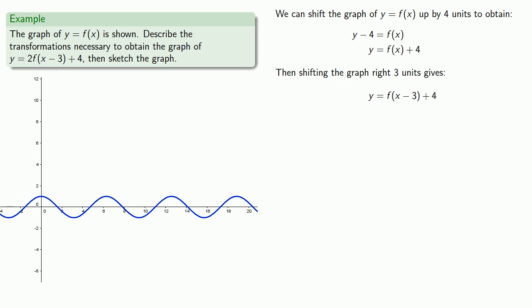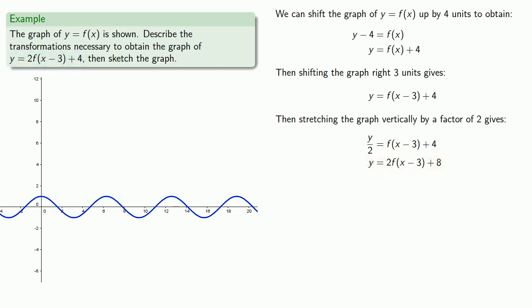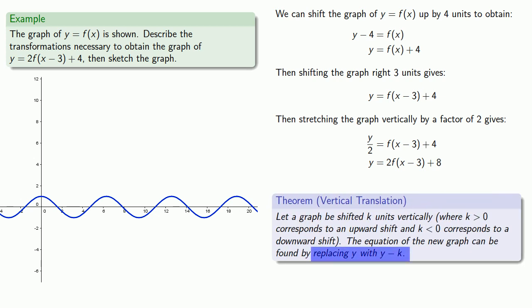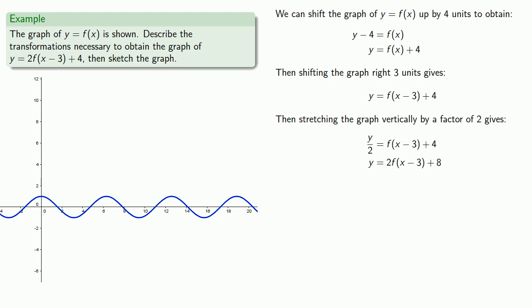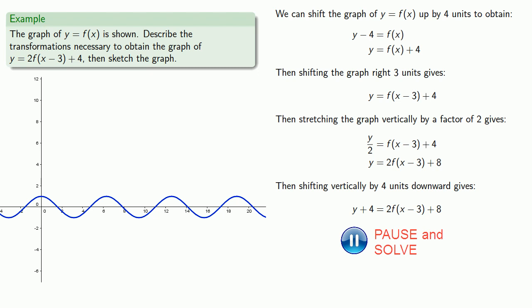We've done a horizontal and vertical shift, so let's try stretching the graph vertically by a factor of two. If we do that, the equation of the new graph, solved for y, gives us y equals two times f of x minus three plus eight. But we want y equals two times f of x minus three plus four — so that's not quite right. We can try to fix it: vertical translations add or subtract a constant to the whole thing, so let's do another vertical shift at the end — shifting down by four units. Solving for y gives us exactly what we want.